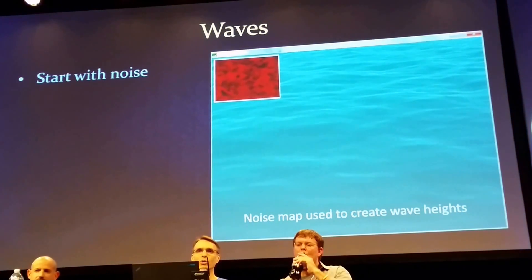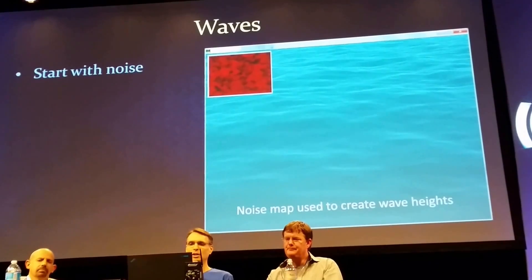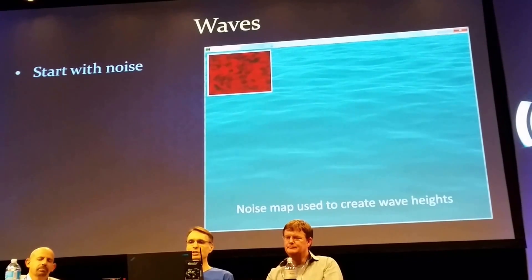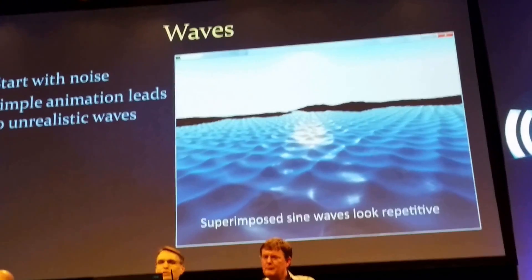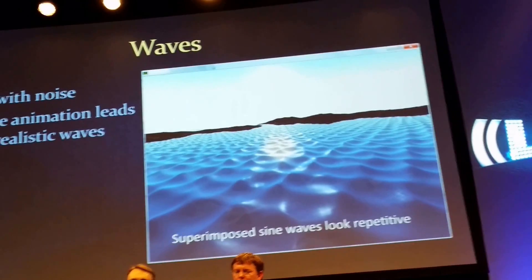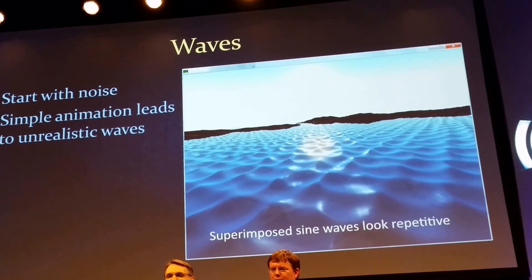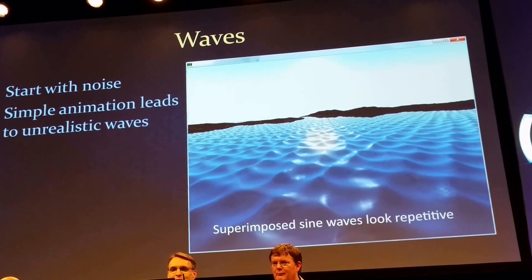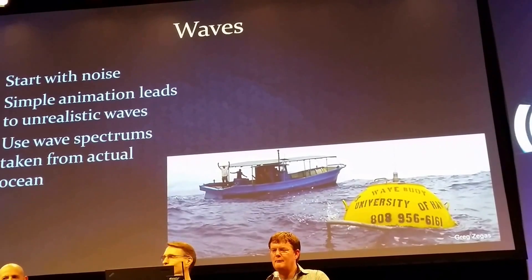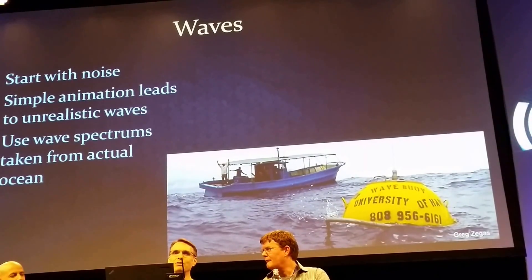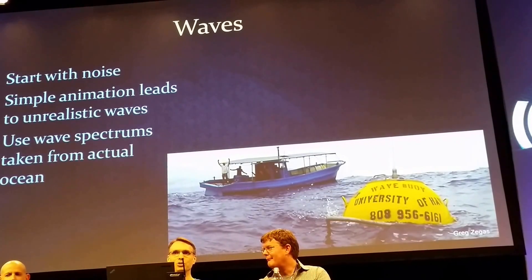How do you animate waves? You start with what's called a noise map — basically just a texture that has some noise in it — and then you apply it to the heights of the waves and animate them over time. A lot of games early on used a very simple animation with overlapping sine waves, which gave kind of an unrealistic, choppy look. But eventually Hollywood found a way — the first movie that did it was Titanic — of using actual wave spectra collected from real ocean wave data and applying those to wave animations. That's what we've done here.